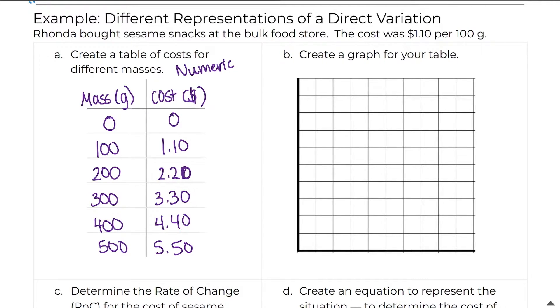Our graphical representation is going to be shown right here. Create a graph of your table. So our independent variable is our mass, and we'll put this in grams. And then our dependent variable is our cost, and that is measured in dollars. And we have to include zero in this bottom left-hand corner at the origin. And for my mass, I will put 100 here, 200 here, so on and so forth.